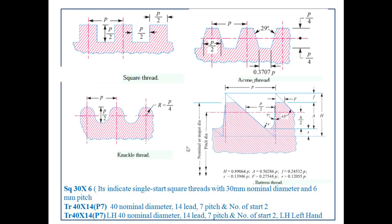The buttress thread is used for transmission of power in only one direction; the force is transmitted almost parallel to the axis. This thread combines the advantages of both square and V-threads — it has low frictional resistance like the square thread and the same strength as the V-thread. The spindle of bench vices is usually provided with the buttress thread. The main disadvantage is that it can only transmit power in one direction.